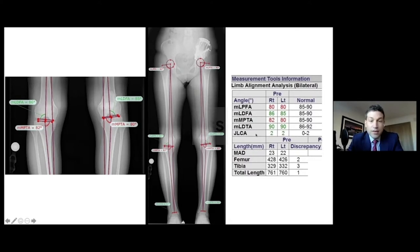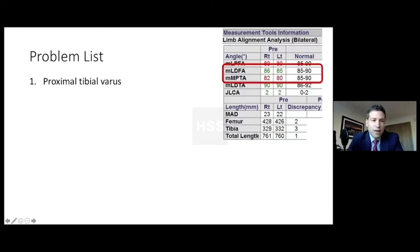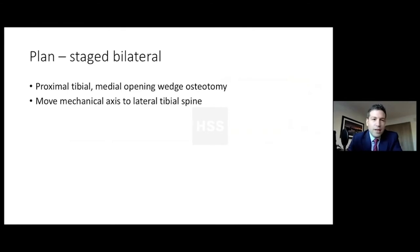I like what Taylor did with the joint line convergence angle, at least highlighting that this patient really doesn't have any pathology in the joint itself. So this is the patient who has proximal tibia varus, and we're going to do staged bilateral treatment. We're going to do a medial opening wedge osteotomy, and we're going to plan this according to the mechanical axis.